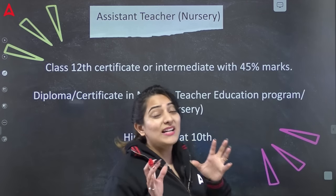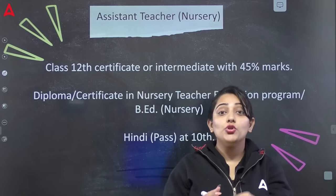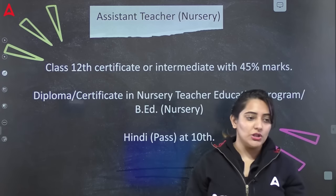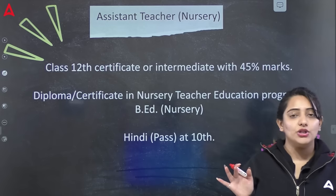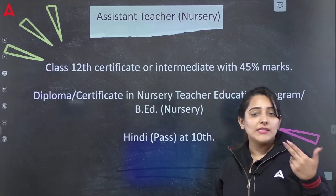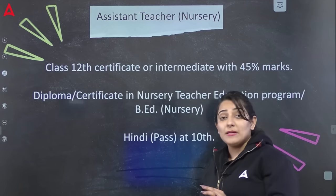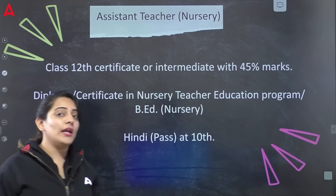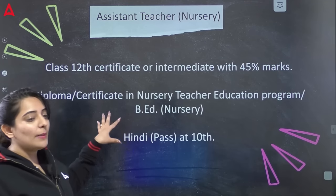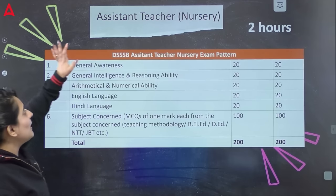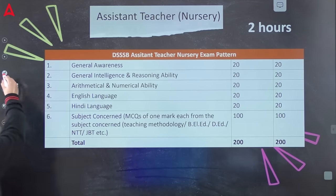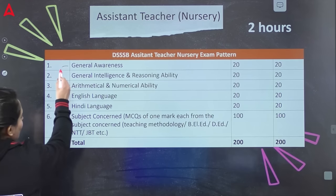अब अगर हम teaching post पे specifically बात करें, currently जो vacancy है वो Assistant Teacher Nursery की है। अगर आप Nursery के teacher बनना चाहते हैं तो minimum eligibility criteria यह है: 12th या intermediate, या 10th में 45% marks होने चाहिए। साथ में Nursery Teacher Education Program का diploma या certificate, या B.Ed in Nursery होनी चाहिए। तीसरी condition है कि आप 10th level तक Hindi में pass होने चाहिए। Nursery teacher का exam pattern दो papers में होता है, बाकी exams की तरह ही।